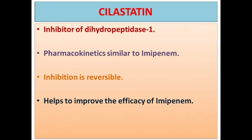Since imipenem is getting destroyed by dihydropeptidase-1, you want to add cilastatin — an inhibitor of dihydropeptidase-1 enzyme present within the renal tubules. That enzyme gets inhibited by cilastatin, giving a free pathway for imipenem to act. That's the win-win situation when you combine imipenem plus cilastatin.